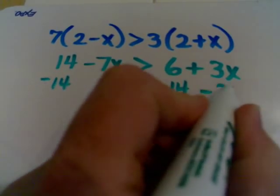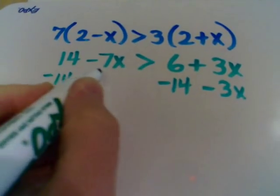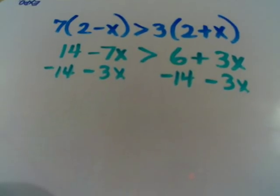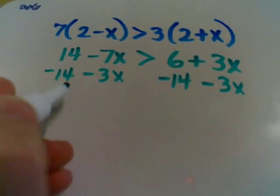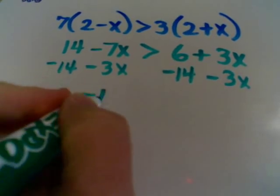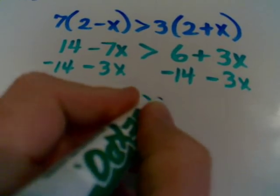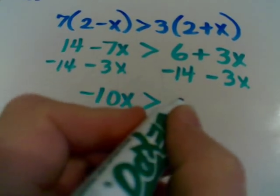And at the same time let's subtract 3x. So what that's going to give me when I collect terms is I have negative 10x is greater than negative 8.